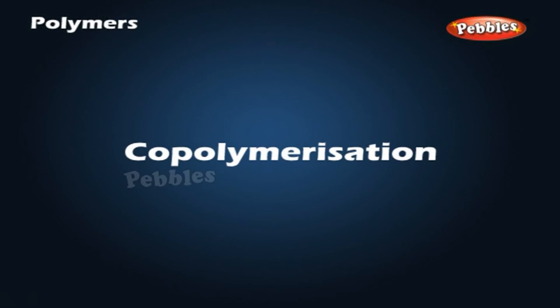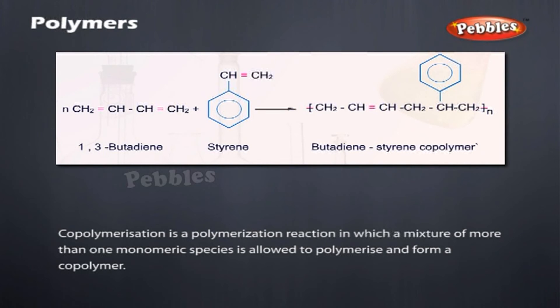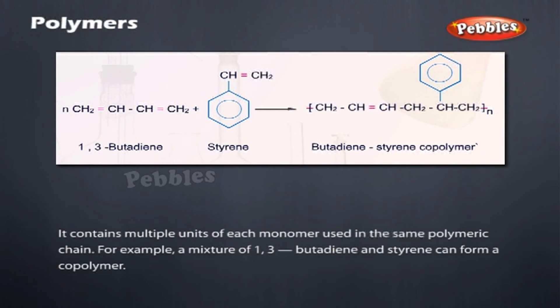Copolymerization: Copolymerization is a polymerization reaction in which a mixture of more than one monomeric species is allowed to polymerize and form a copolymer. It contains multiple units of each monomer used in the same polymeric chain. For example, a mixture of 1,3-butadiene and styrene can form a copolymer.